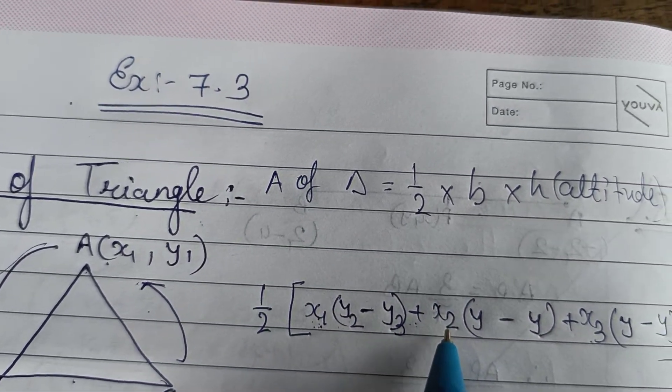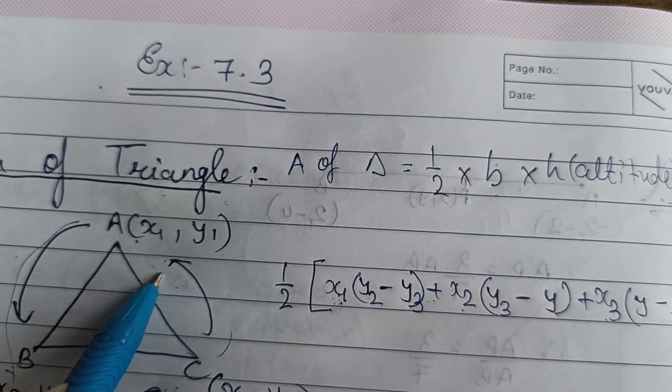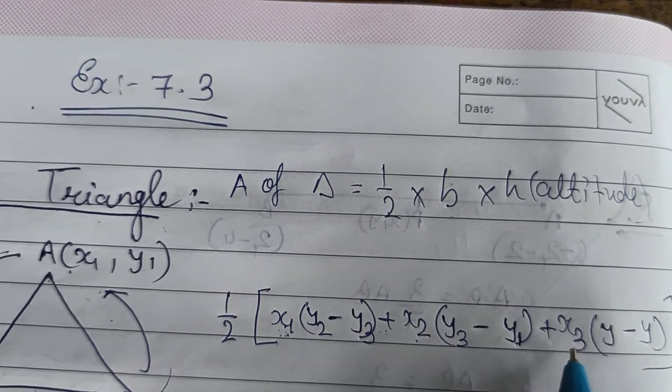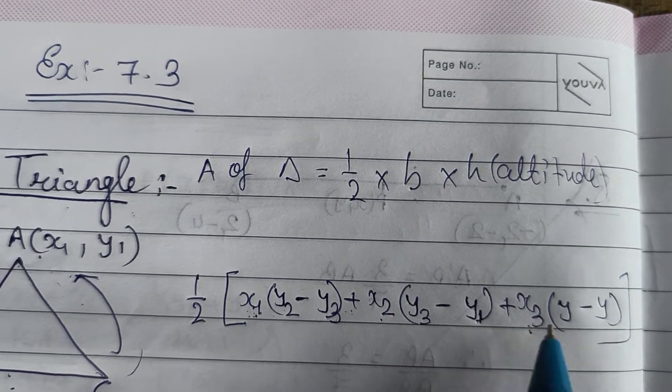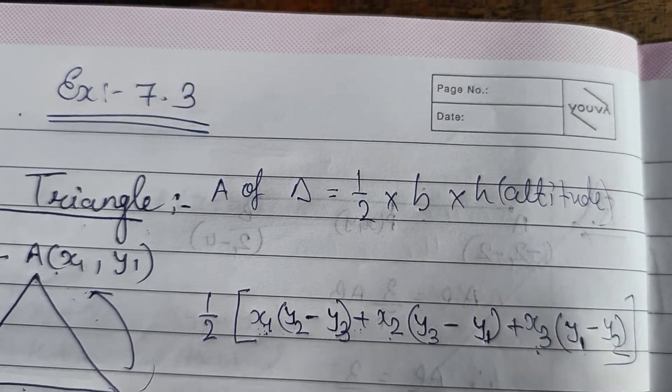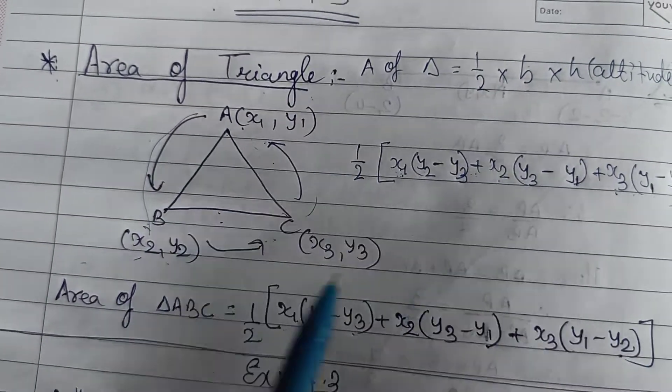Now x2, after 2, 3 will be there. And after 3 we are again having 1. So you will have y3 minus y1 over here. And here it is x3, so after 3 you will have 1 again, so 1. And after 1 you will have 2. So this will be your y1 minus y2. So this way you will have your formula.